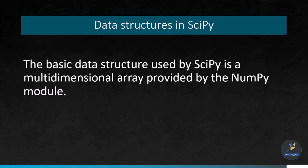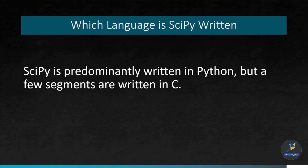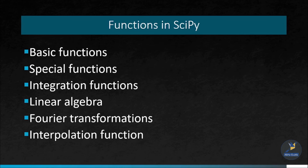The basic data structure used by SciPy is the nd array, or the multi-dimensional array, which is provided in the NumPy module. SciPy is written mainly in Python, but a few segments are written in C as well. There are many functions available in SciPy, which can be classified into basic functions, special functions, interpolation functions, linear algebra and integration functions.